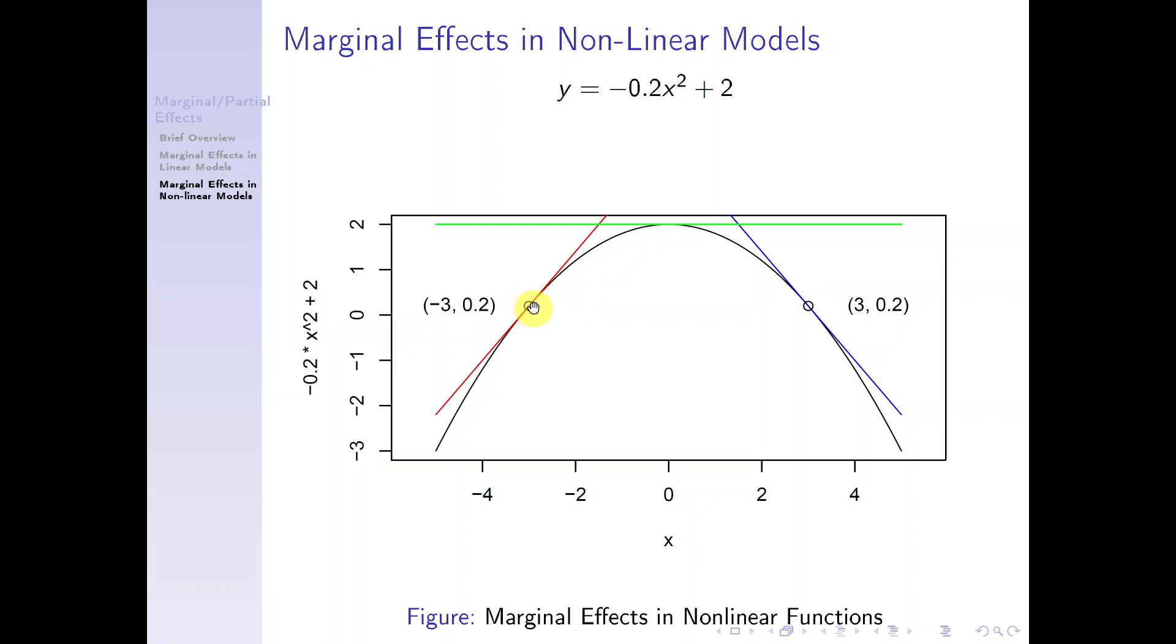Well, we can also take the first derivative here. Then plug in the x value, plug in the x value here, and compute its slope. So it turns out the slope here is positive 1.2.